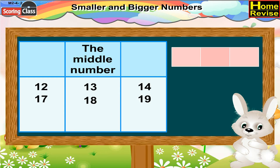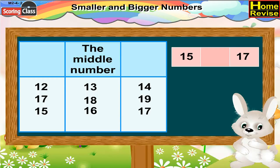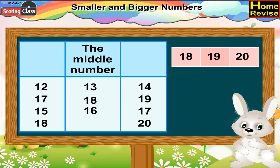Now, let us find the number which is in the middle of 15 and 17. You are right — it is 15, 16, and 17. So, the number is 16. Now, 18, dash, 20. Yes, it is 18, 19, 20. So, the number which comes in the middle is 19.